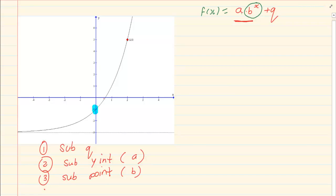So let's start with this equation. We are going to have y is equal to A times B to the power of x minus 3, because our asymptote is minus 3.